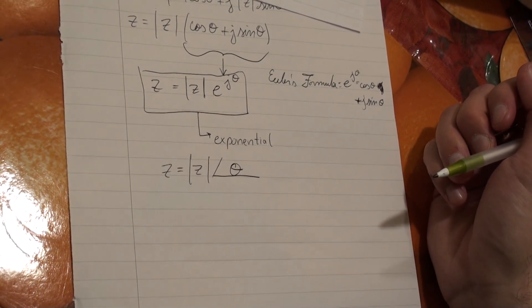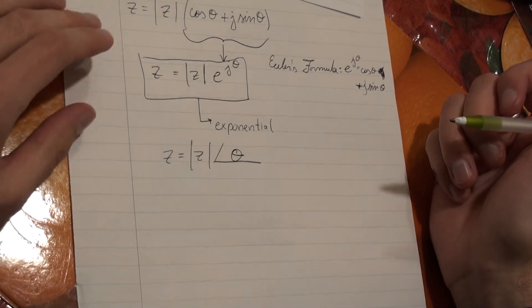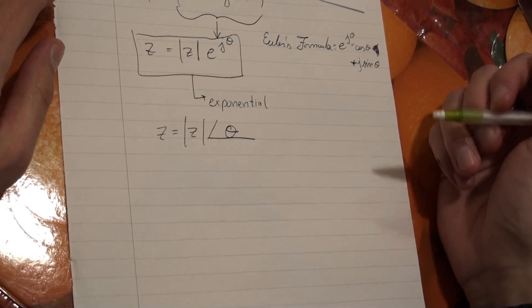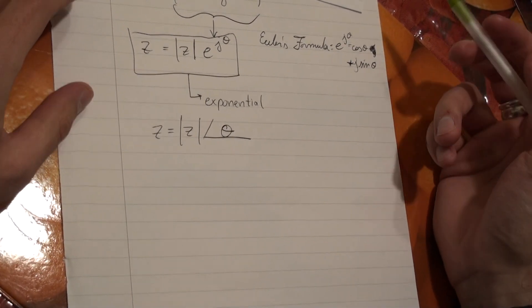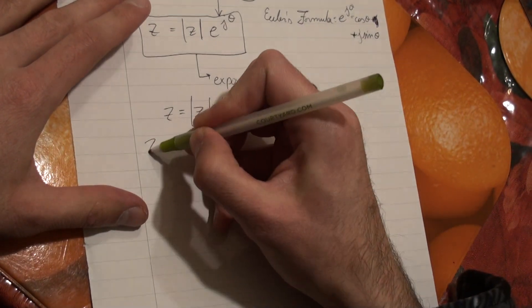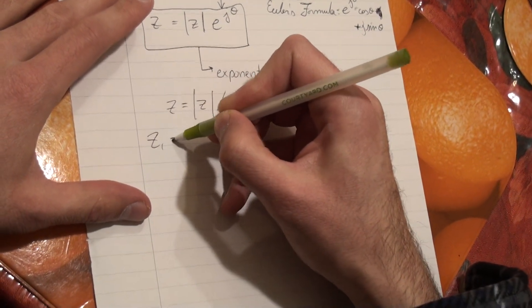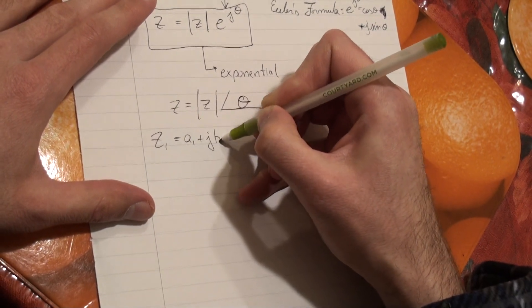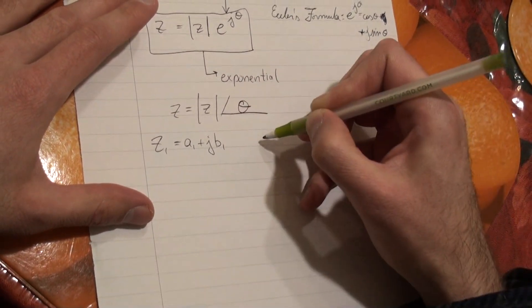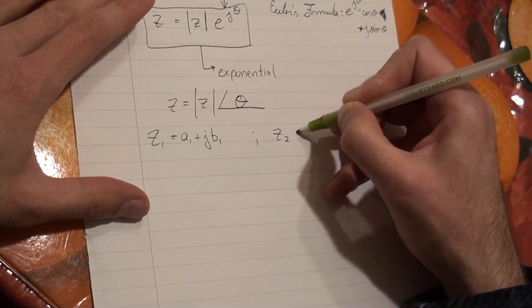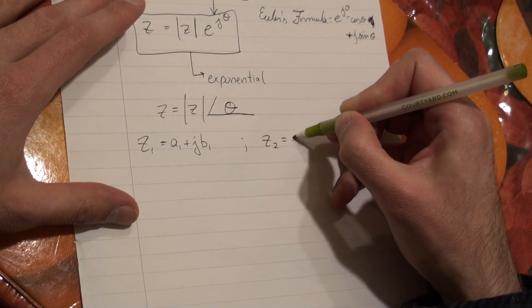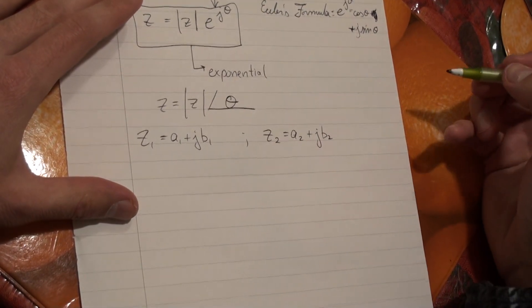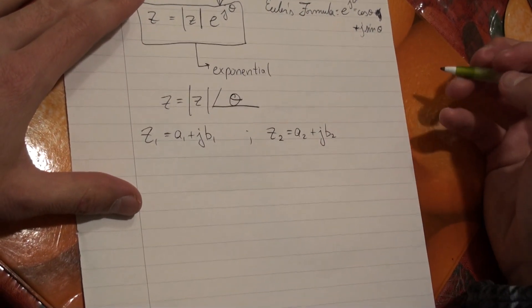Some things that we can do with complex numbers: we can add them, subtract them, and multiply them. Let's take two complex numbers — Z1, which is A1 plus J B1, and Z2, which is A2 plus J B2.